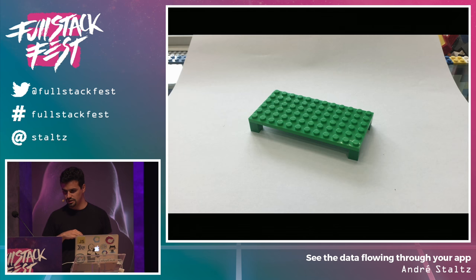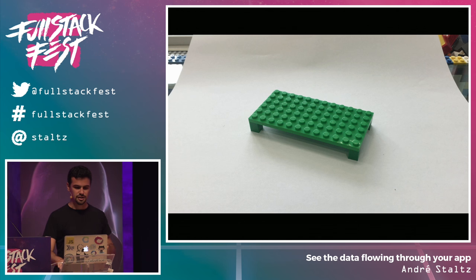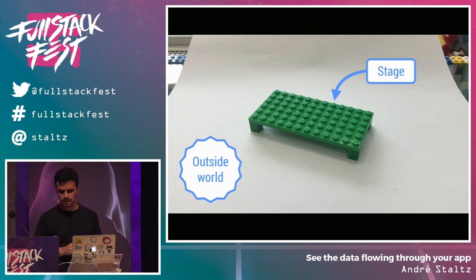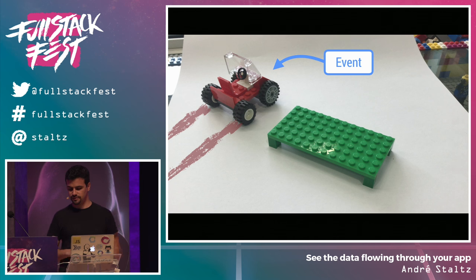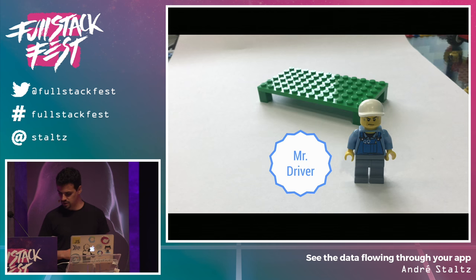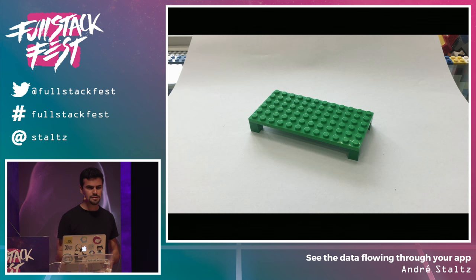Here we have a stage — it's just like this stage but it's green. We also have the outside world, and in the outside world things happen — everything that happens is an event. A red car passed by: that's an event. A blue car passed by: that's an event. We also have Mr. Driver, who knows how to drive cars and can make things happen in the outside world.